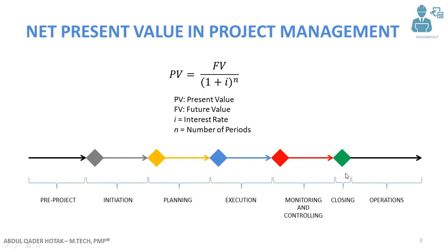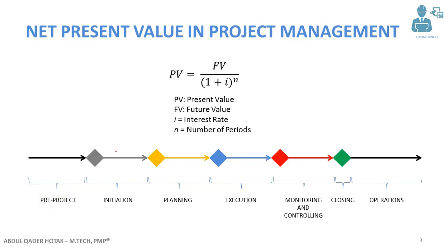It's usually selected as years. Below here I have shown this diagram again, which I used in the benefit-cost ratio analysis as well. This is for you to understand the different stages of a project. We have the initiation phase, planning phase, the execution phase, monitoring and controlling phase, and the closing phase.